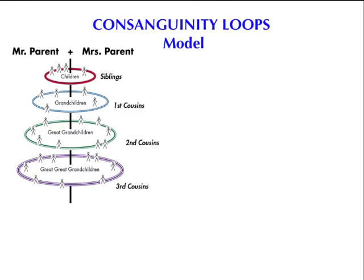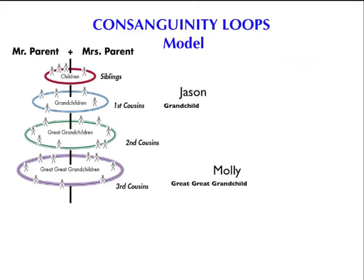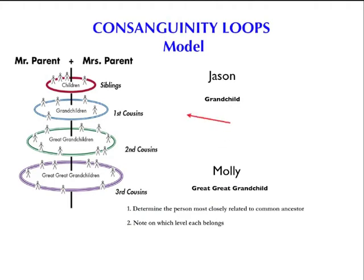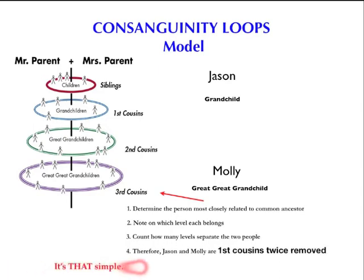Now let's put this to real life so you can see how this works and how easy it is to understand. Jason and Molly. We know that Jason is a grandchild of the original couple, and Molly is the great-great-grandchild. So how are Jason and Molly related to one another? Well, this is really simple. The first thing you do is determine the person most closely related to the common ancestor. We know that's Jason because he's a grandchild. Now we have to note on which level he belongs, and as a grandchild, he belongs on the first cousin's level. Next, you just count how many levels separate the two people — one, two — and voila, Jason and Molly are first cousins twice removed. It's that simple, really.